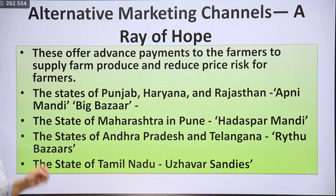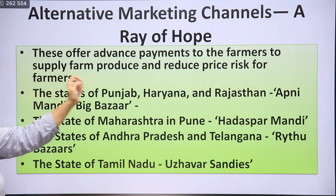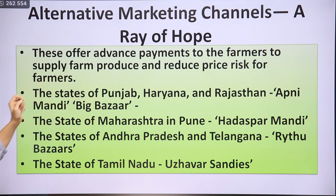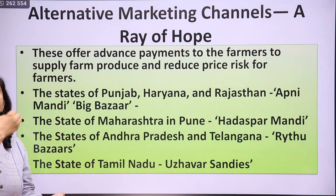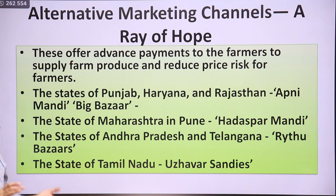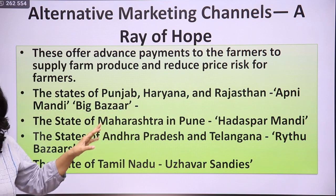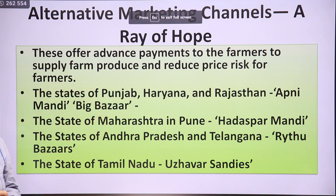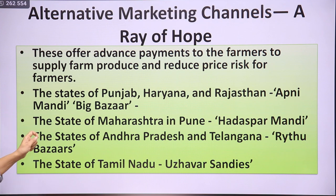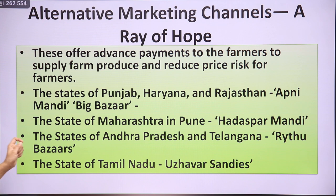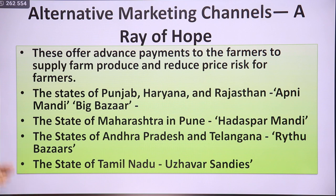Alternative marketing channels offer advance payments to farmers for their produce and reduce price risk. States like Punjab, Haryana, and Rajasthan have Apni Mandi or Big Bazaar where farmers get advance payment and fetch good prices. Maharashtra has Hadaspar Mandi in Pune, Andhra Pradesh and Telangana have Rythu Bazaars, and Tamil Nadu has Uzhavar Sandis. These are new-generation markets that give farmers better bargaining power and better prices for their produce.